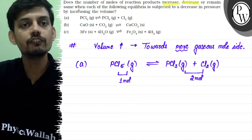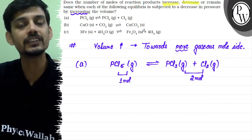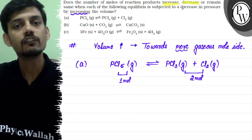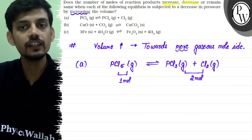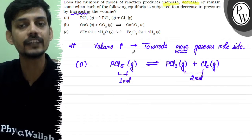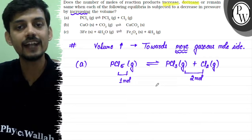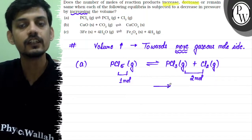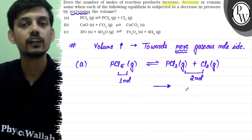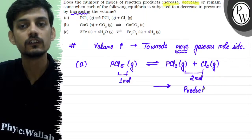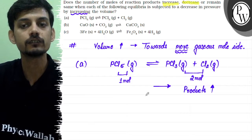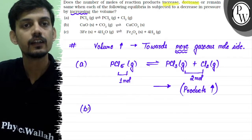If volume is increased — that is, pressure is decreased by increasing the volume — the reaction should move towards the higher gaseous mole side. The product side has more gaseous moles, so the equilibrium will shift towards the product side. Therefore, we can say that the amount of product will increase for this first reaction.